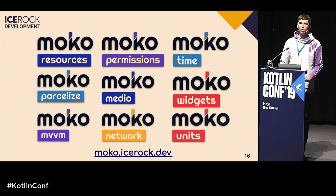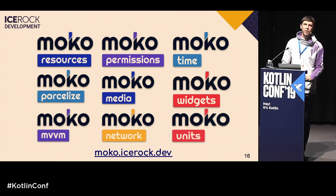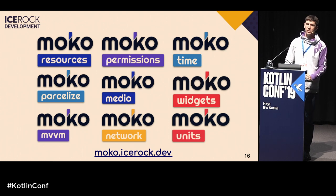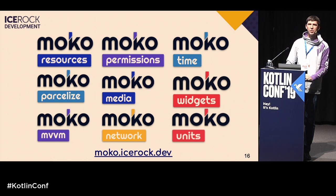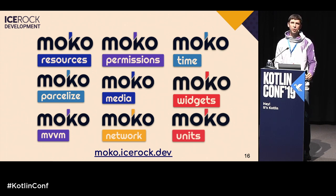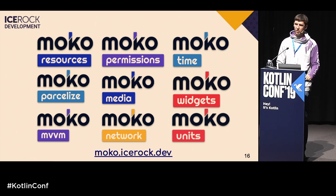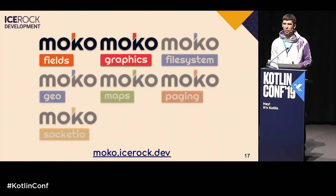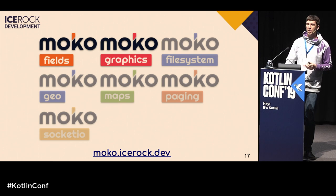Mocha MVVM is an architecture model — we use MVVM architecture. On Android it uses Google Architecture Components, and on iOS we implemented this architecture ourselves. Mocha Network provides additional components for Ktor and an auto-generation plugin from OpenAPI specification. Mocha Units is for list management — RecyclerView and TableView from shared code. There's another set of libraries, not all public yet.